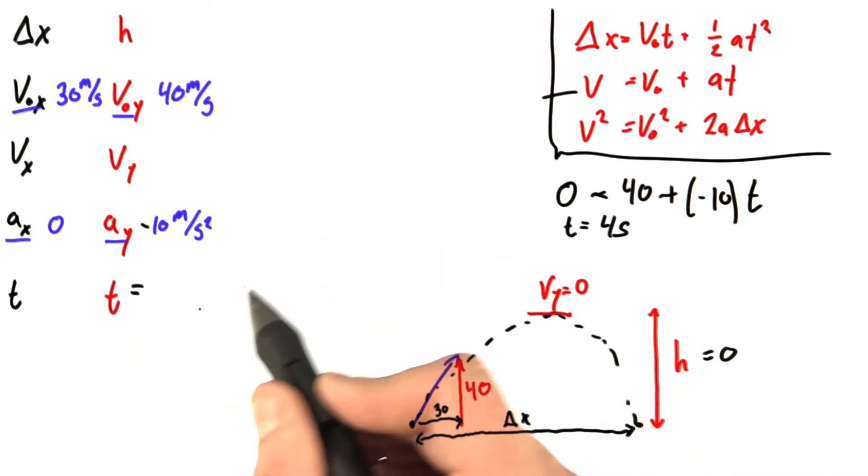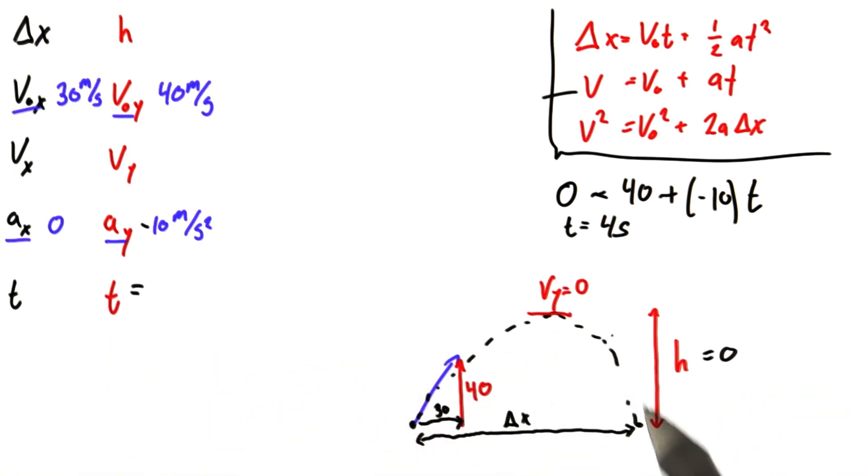Now, can you tell me what I should put here if this time represents the total travel time of the ball going up and then back down? I'll give you a hint. The answer is not 4.